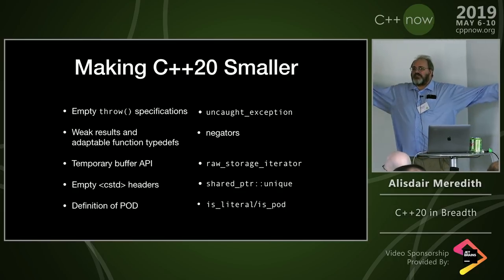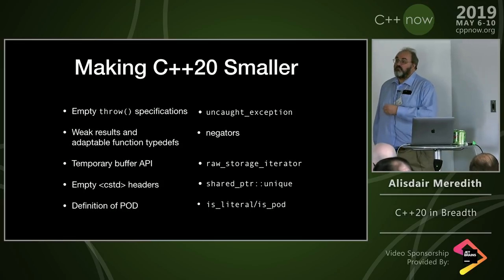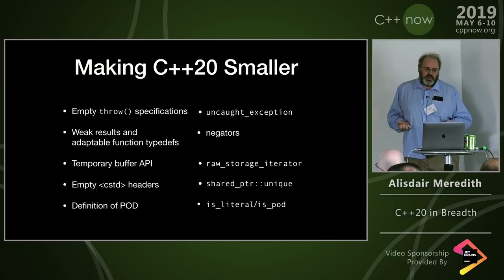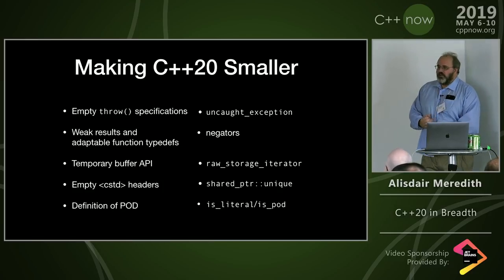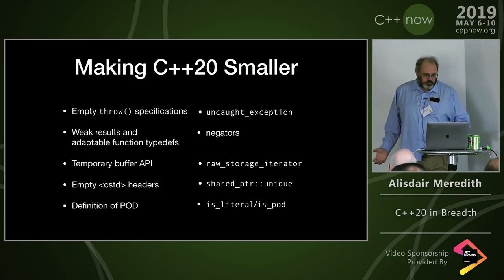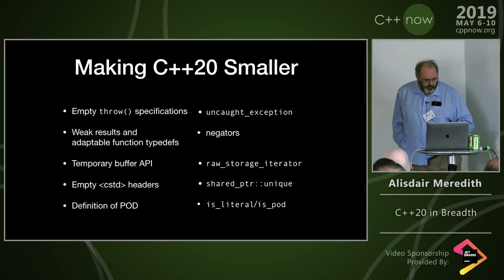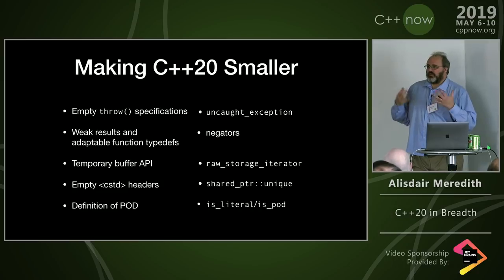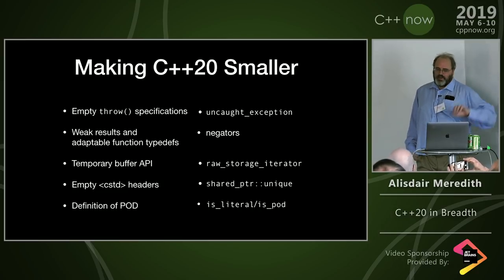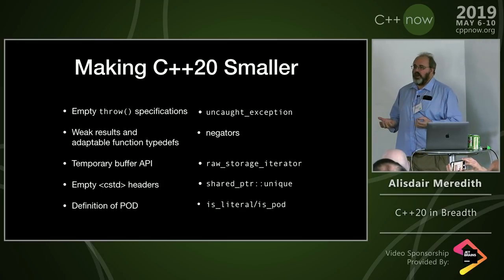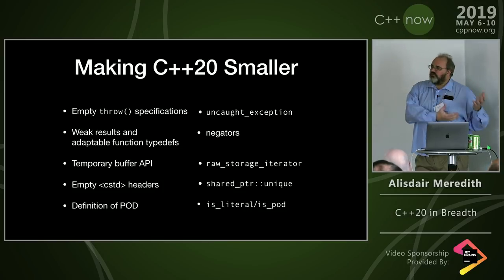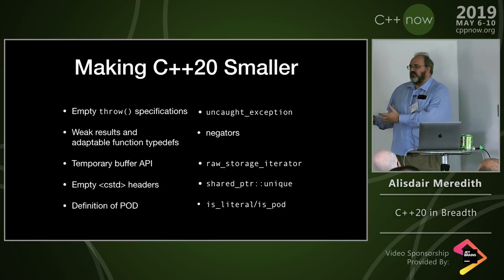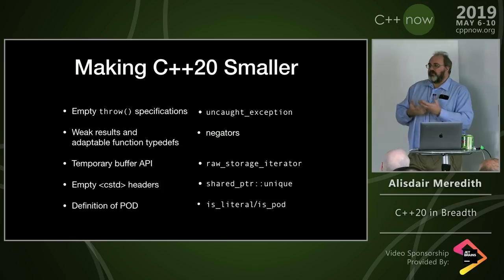I always like to start with 'let's make C++20 smaller' — which things are we actively retiring? First, the empty throw specification is removed because you simply replace it with noexcept; it's been deprecated for a while. Along with that, uncaught_exception was removed — it went along with the whole exception specification feature. In the standard library, the adaptable function API bind1st/bind2nd was removed in C++17, but we kept the typedefs that supported that protocol because of the negators not1 and not2.